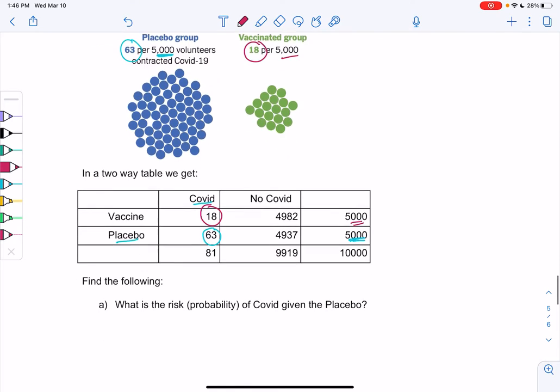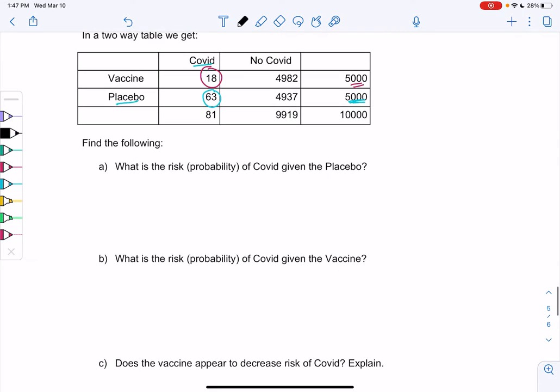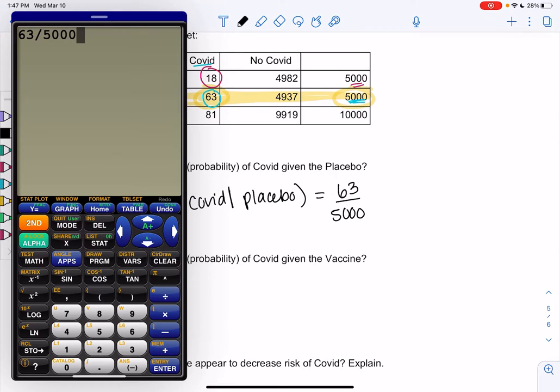So let's find the risk, and then I'm going to go a little bit farther than the homework to teach you what efficacy is. So what's the risk of catching COVID if you're in the placebo group? Risk and probability are the same thing. Risk is just something on the more negative side. So we'll do COVID given the placebo. We're only going to look at the placebo part of the table. So 63 out of 5,000 contracted COVID. So that tells us 0.0126 or 1.26% caught COVID.